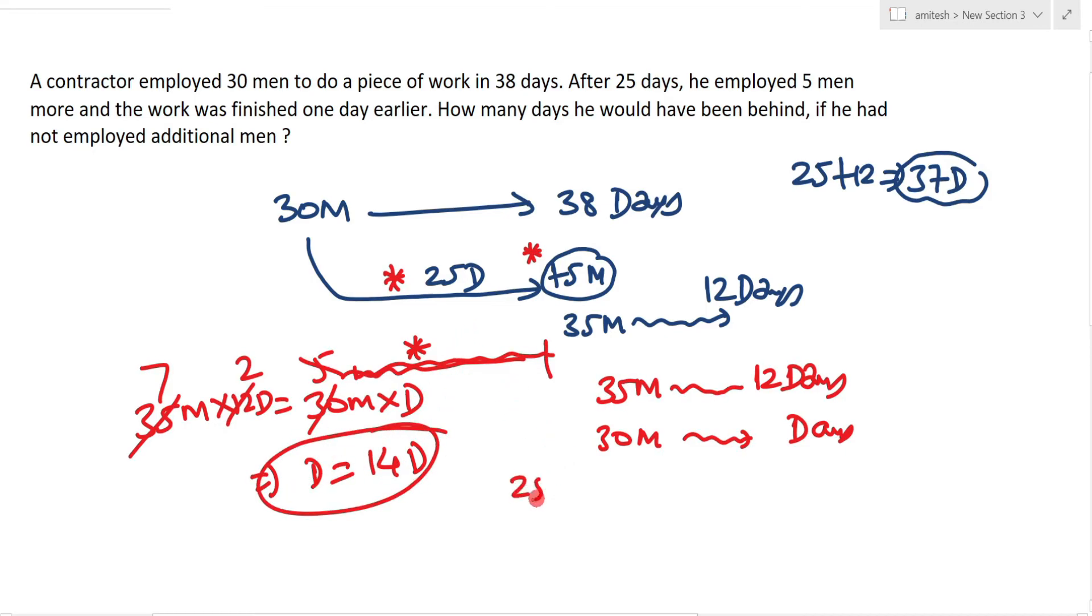In that case, the total number of days will be 25 plus 14, which equals 39 days. So if the contractor does not employ five more men, the work will be completed in 39 days. The initial time period was 38 days, so the worker has to work for one extra day to complete the work.